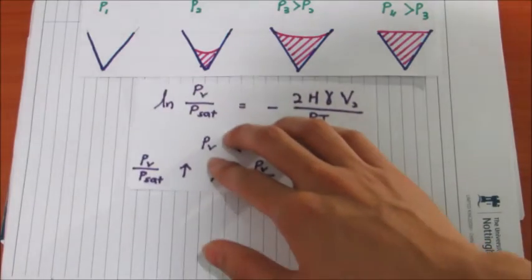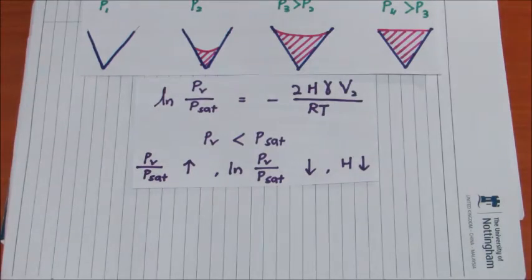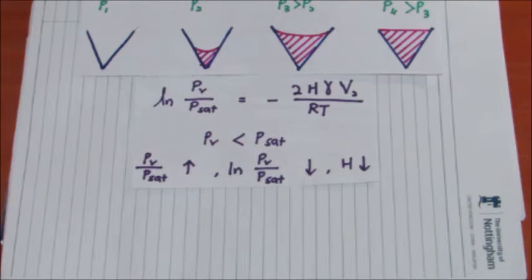Using Kelvin equation with condition of PV smaller than P saturation, as PV increases, the value of ln(PV/Psat) decreases, which in turn causes H to decrease.